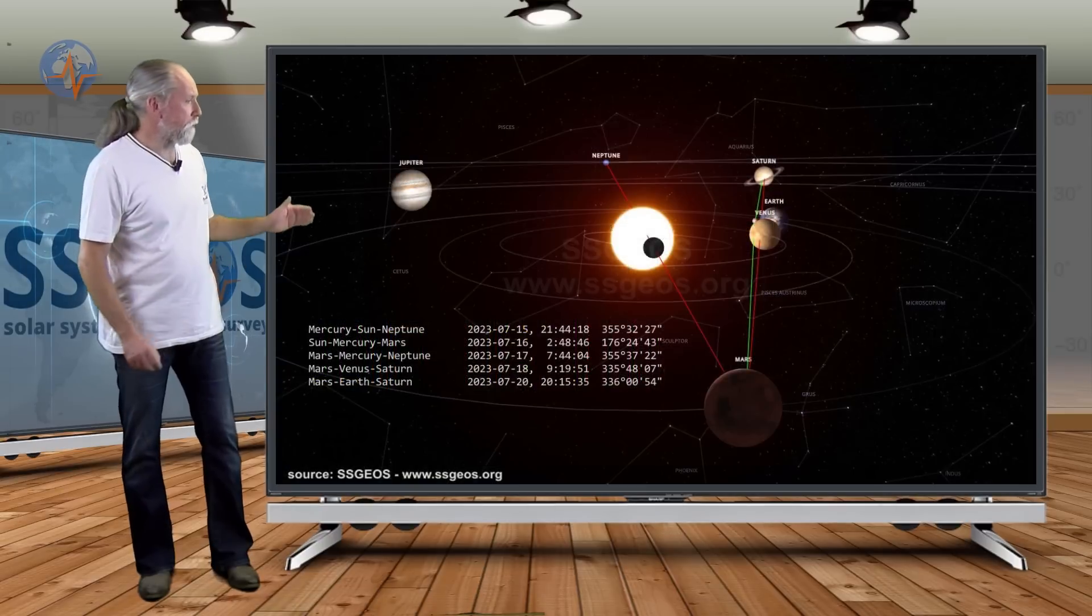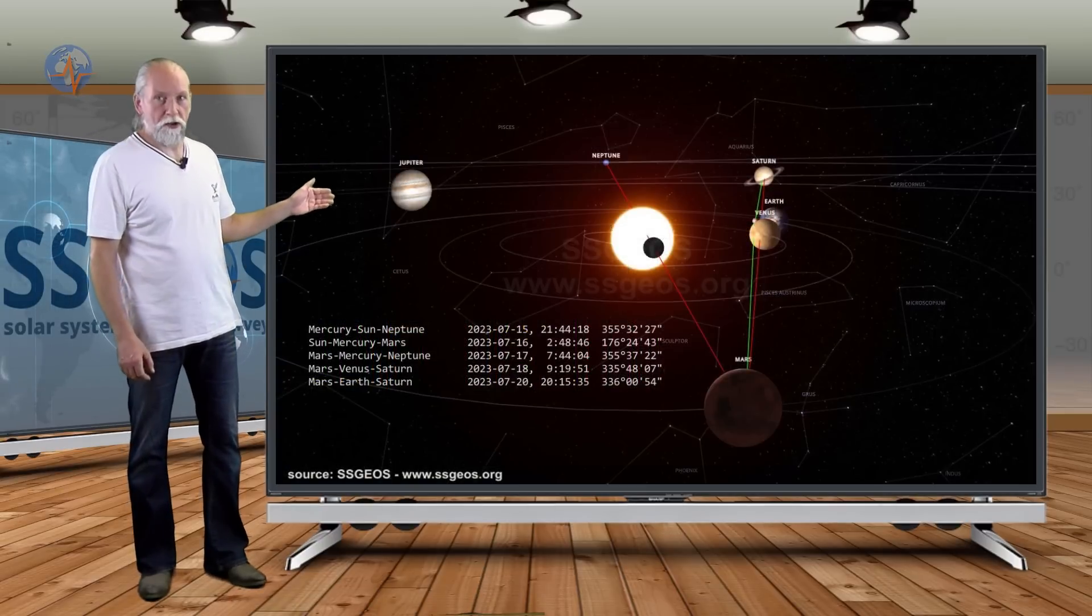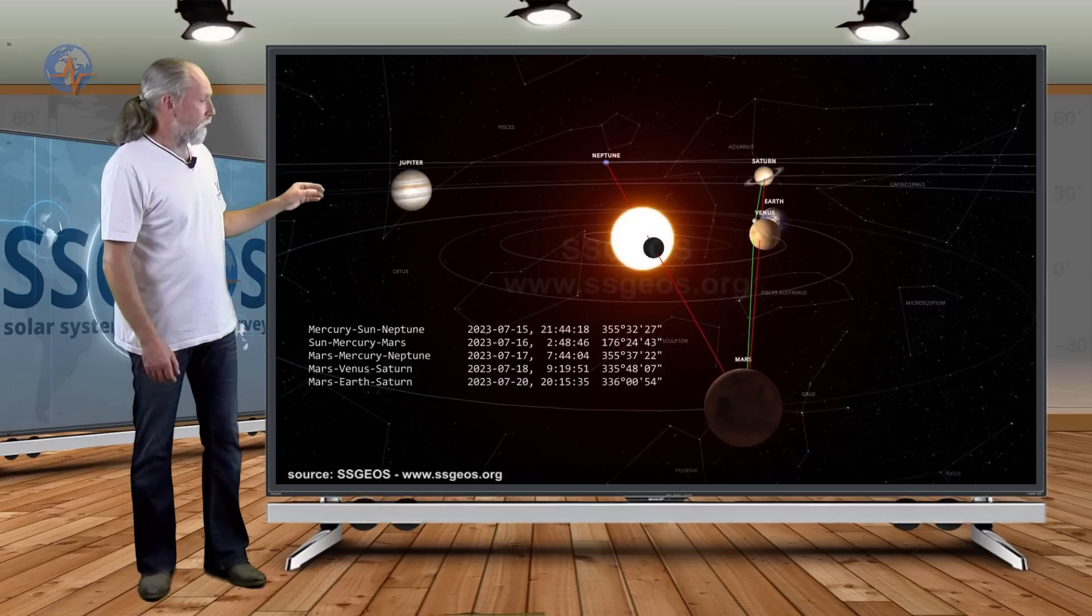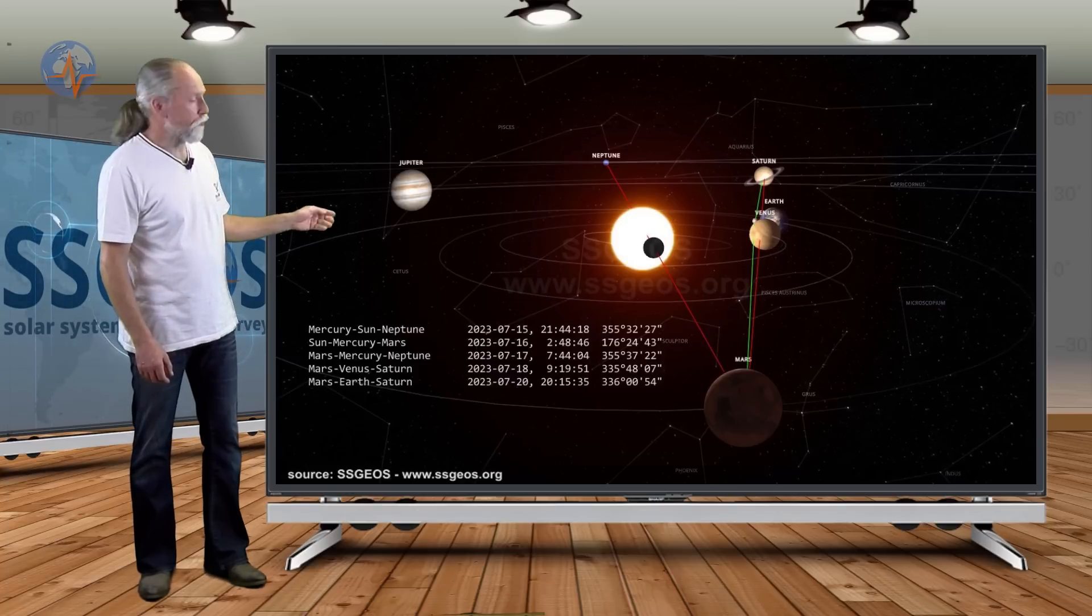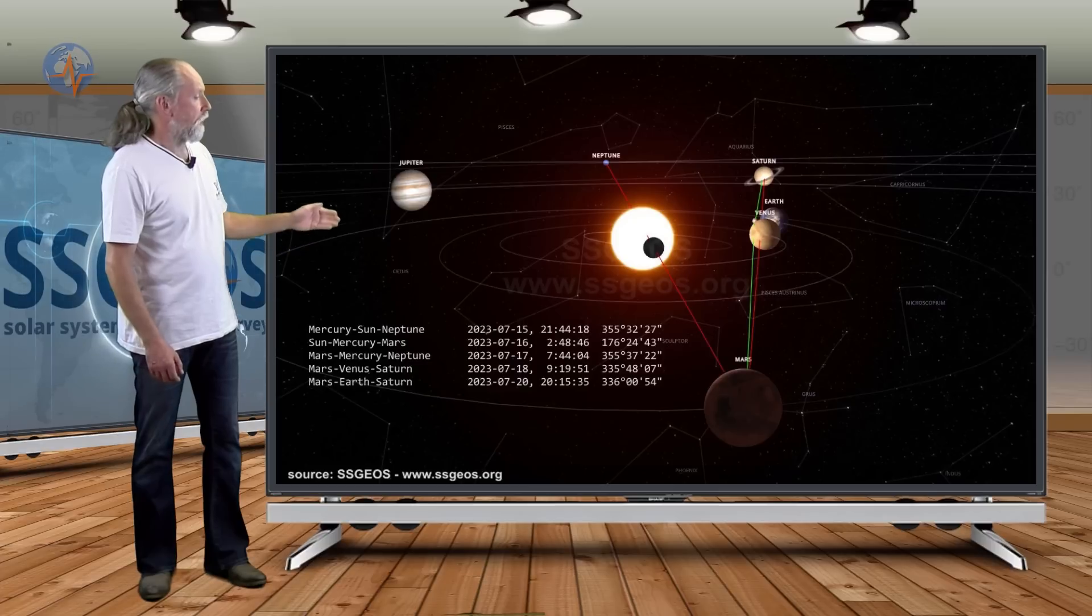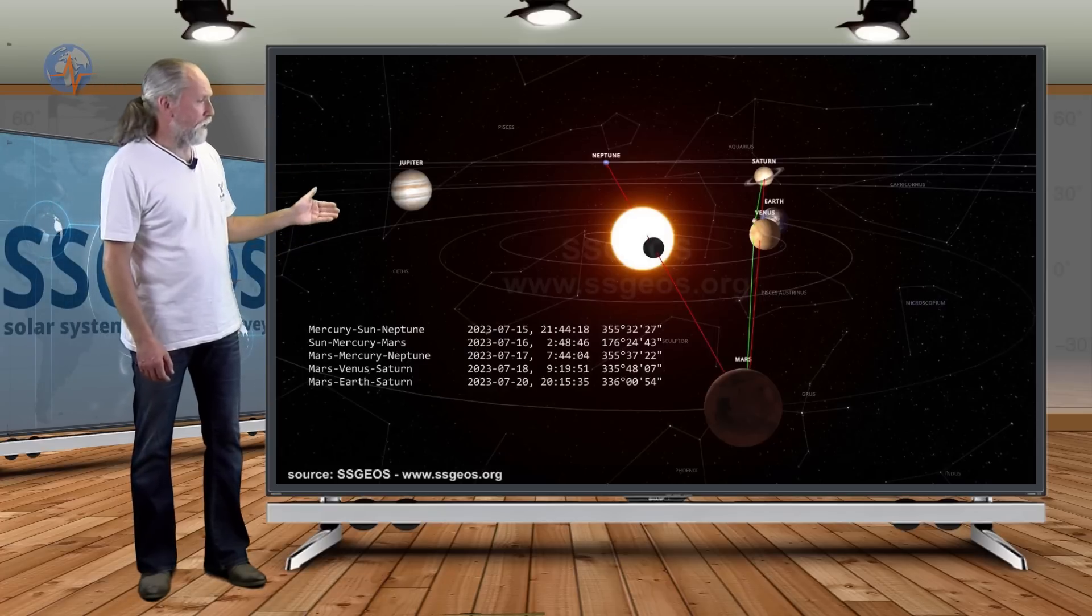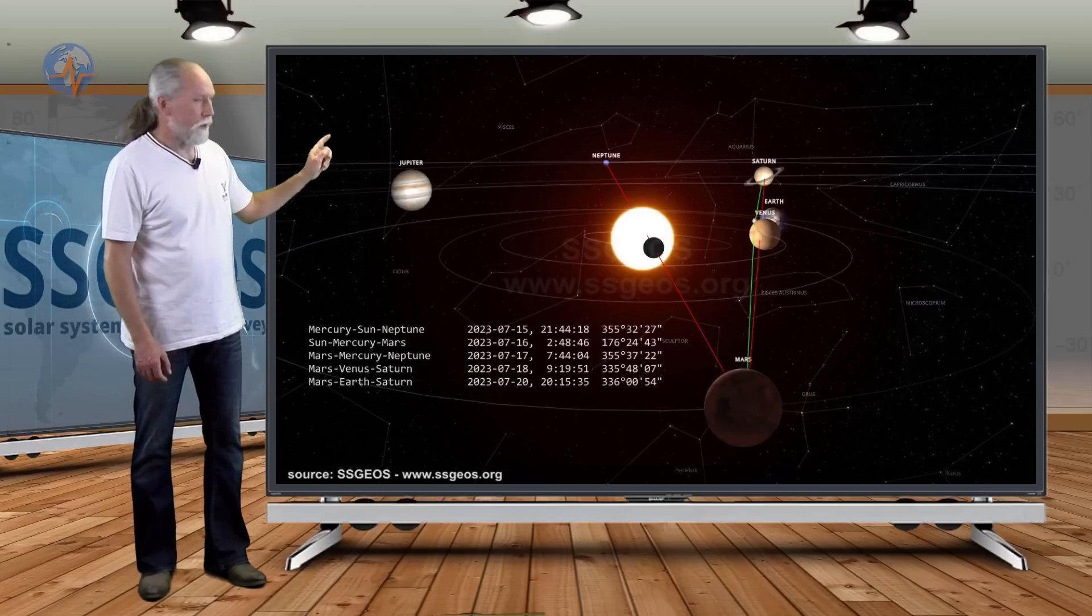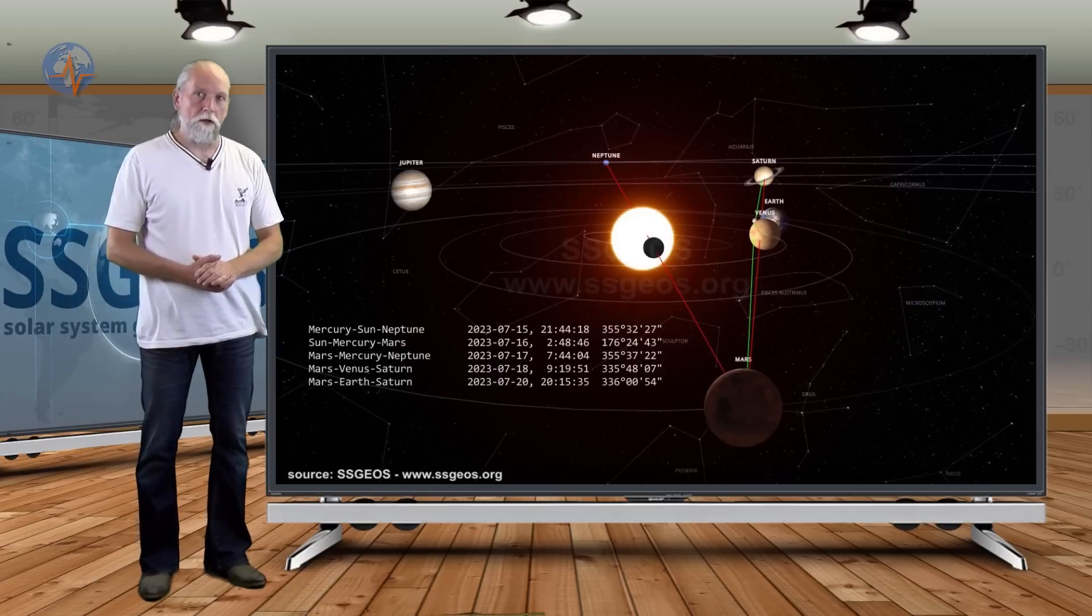If we look at the solar system, we see the planetary conjunctions in the next couple of days. Mars is a key player. We see here the near quadruple conjunction with Mars, Mercury, the Sun, and Neptune. Then also as you can see, Venus and Earth are very close between Mars and Saturn. That's what we're going to have in the next couple of days.